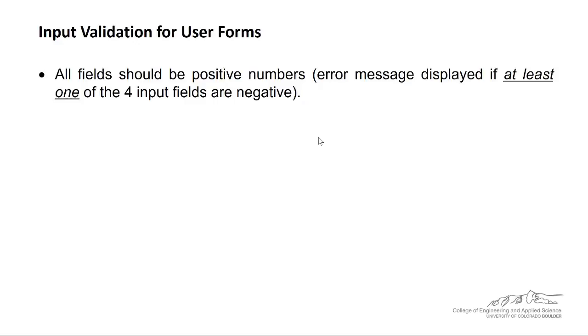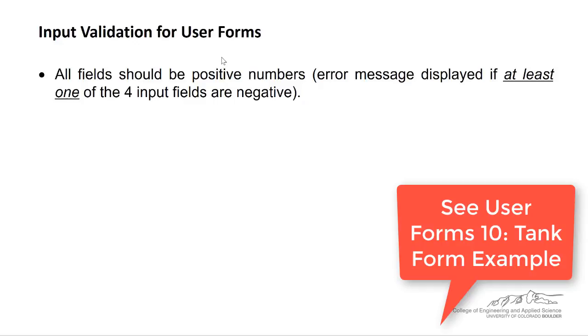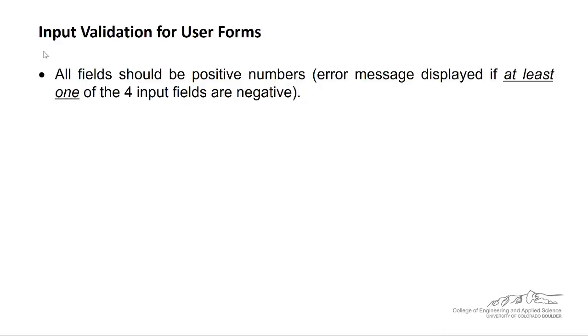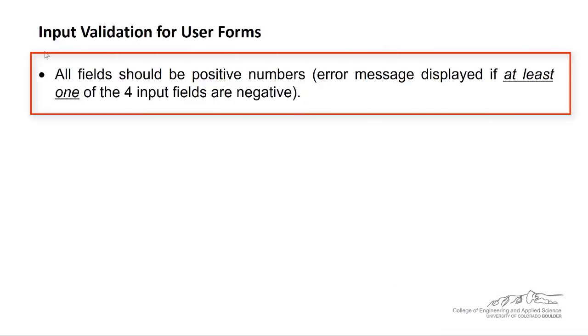We're going to do a couple of different types of input validation. The example I'm working with is the tank example in the preceding screencast. First of all, we want to make it such that the user cannot enter any negative numbers, so all fields should be positive. And we're going to display an error message if at least one of the four input fields is negative.